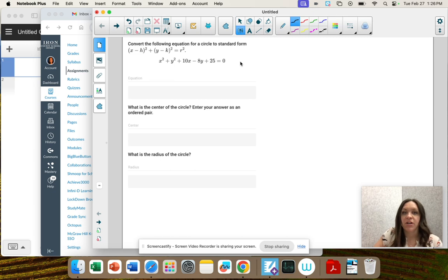So I'm going to start with rearranging this. I'm going to get my x values first. So x squared plus 10x. And now my y values, y squared. And then it's negative 8y. So make sure you bring the sign. And then this 25, I'm going to move over to the other side. So equals negative 25.